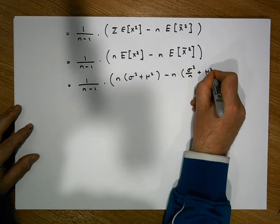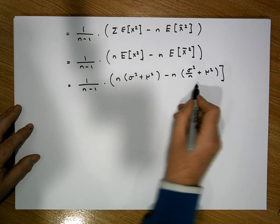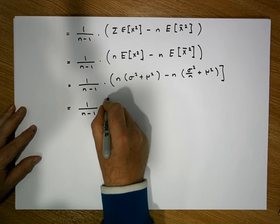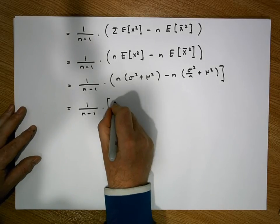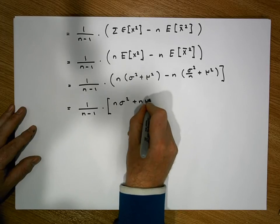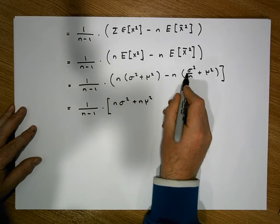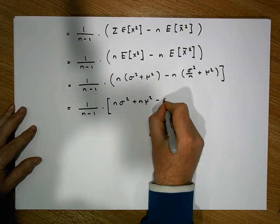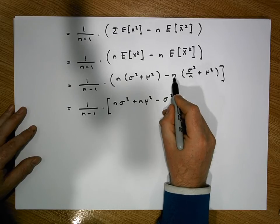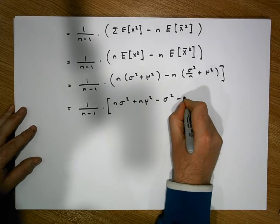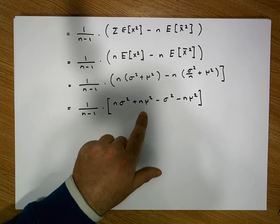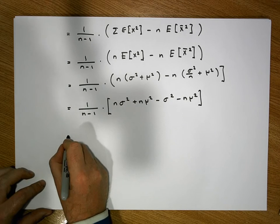Multiplying through by n: n times sigma squared is n sigma squared, n times mu squared is plus n mu squared, minus n times sigma squared over n is minus sigma squared, and minus n times mu squared is minus n mu squared. The n mu squared and minus n mu squared cancel, leaving us with 1 over n minus 1 times n sigma squared minus sigma squared.